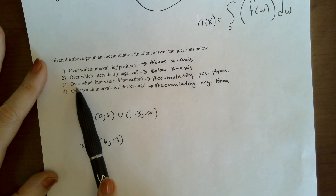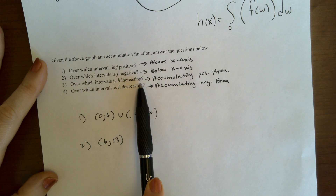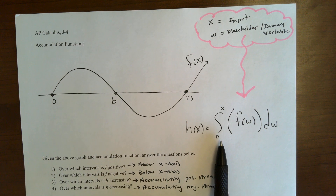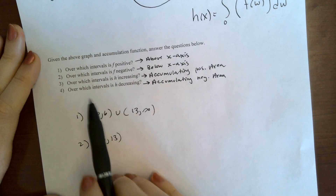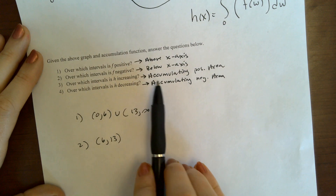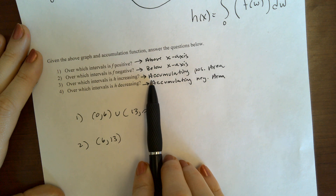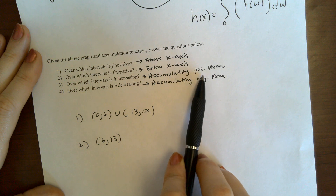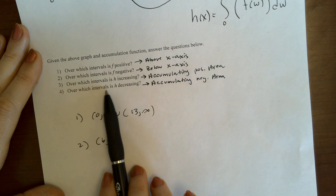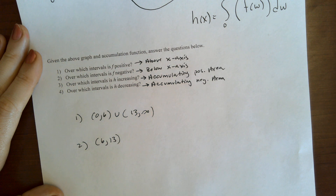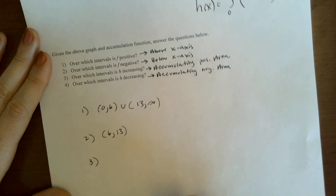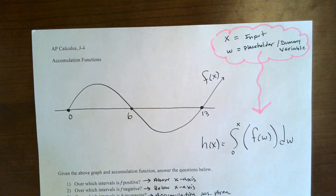Now they're going to ask us questions about h. Over which intervals is h increasing? An accumulation function works by adding on more and more area — accumulating different amounts of area. So intervals over which h is increasing are going to be the intervals over which h is accumulating positive area. And over which intervals is h decreasing? That's going to be where h is accumulating negative area.